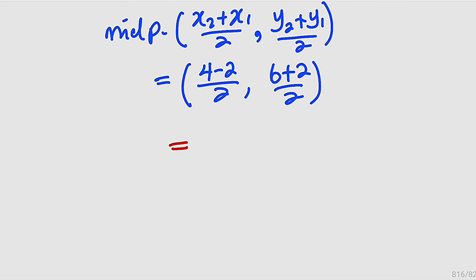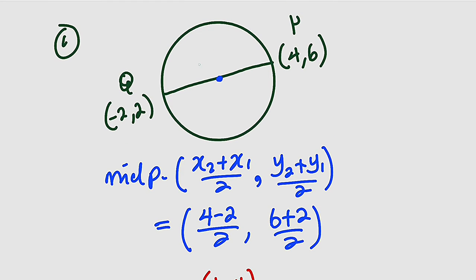We simplify to obtain the coordinates of the center. This is equal to (4-2)/2, which is 2/2 = 1. So we have 1 for x. 6 plus 2 is 8, divided by 2 is 4. So we have 4 right here. Therefore, the center of that circle has the coordinates (1,4).